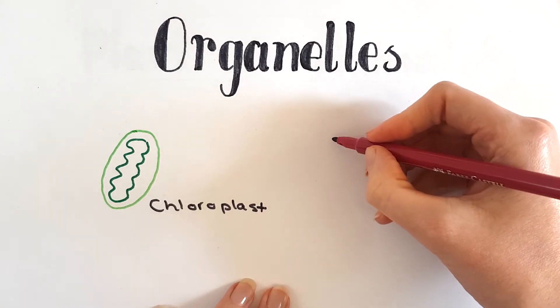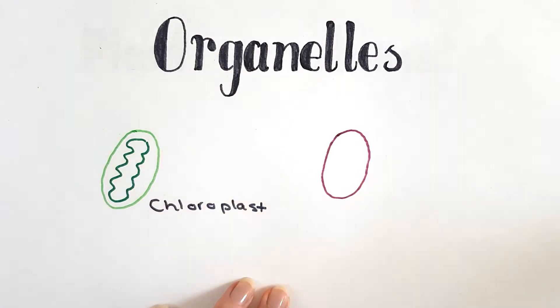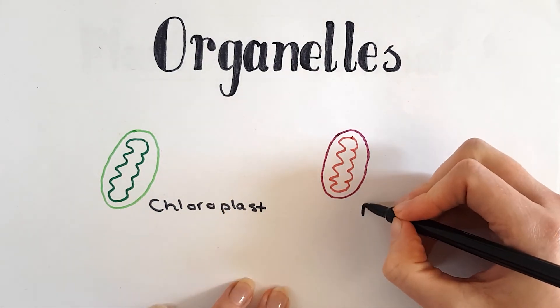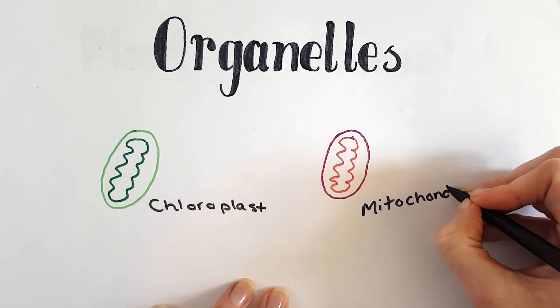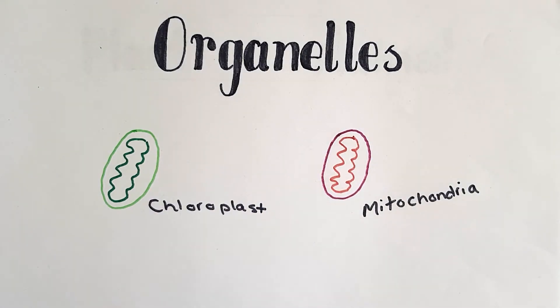Other organelles we're going to focus on, which is also very important, is the mitochondria. The mitochondria is the organelle in which respiration takes place. Respiration is a process all living organisms undergo, where they release the energy from sugar to be able to live and survive.